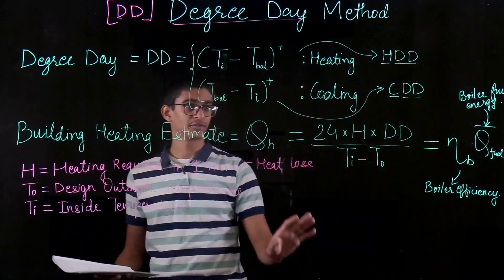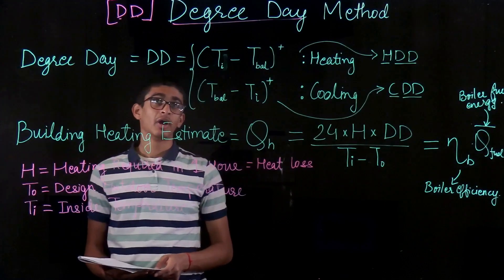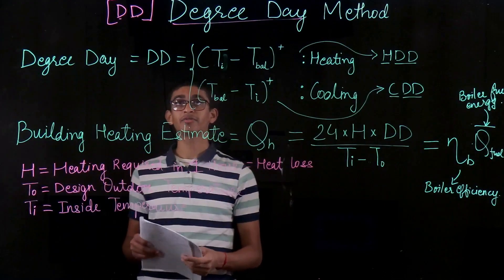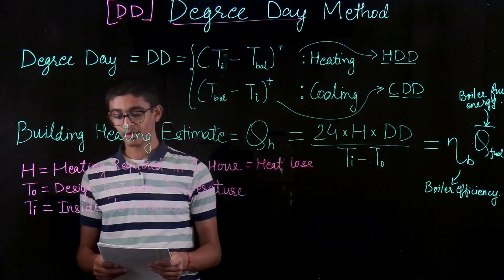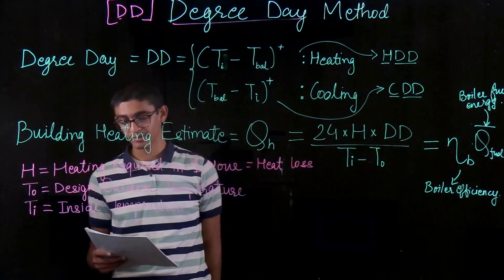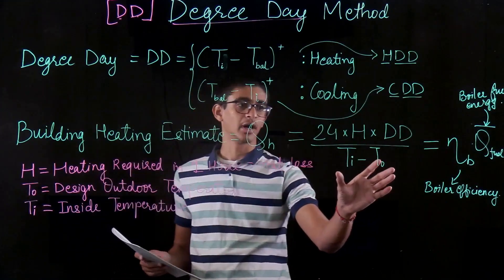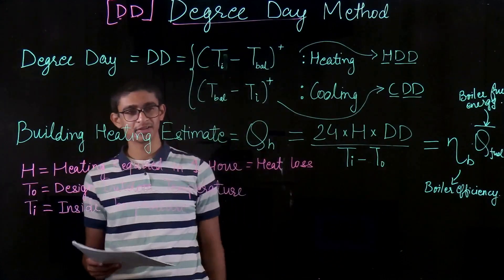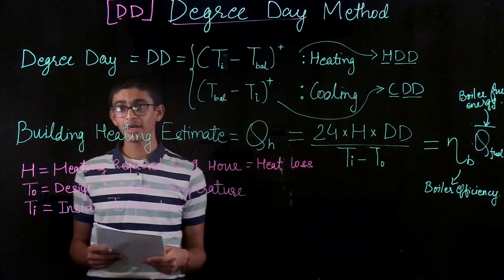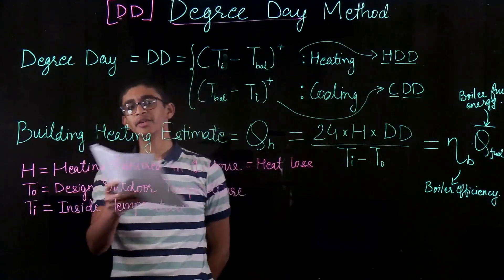The advantage of this method is that we only need weather data — that means just the outdoor temperature data. We do not need any other information about the building. It provides very simple and easy calculations — a very simple formula to get the average heating or cooling required.